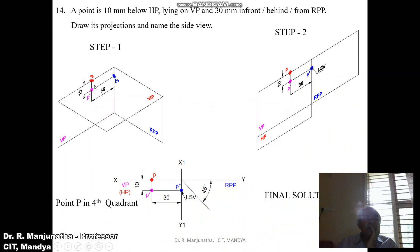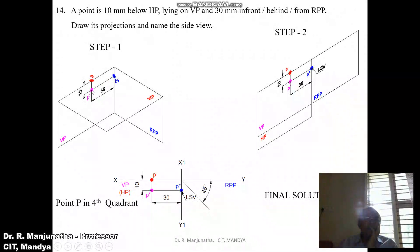Looking from the front view, we can see the distance below HP — this distance is seen in the vertical plane, giving us point P dash. Looking from the top view, since the point is lying on VP, it will fall on the horizontal plane, giving us small p. The distance 30mm from RPP is seen in both VP and HP.